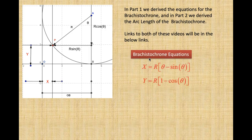Therefore, that gives us the brachistochrone equations: X equals R times the quantity theta minus sine theta, and Y equals R times the quantity one minus cosine theta. If you still have an issue with these or you're kind of fuzzy on how we've determined these, please click video part one and refresh on that part.